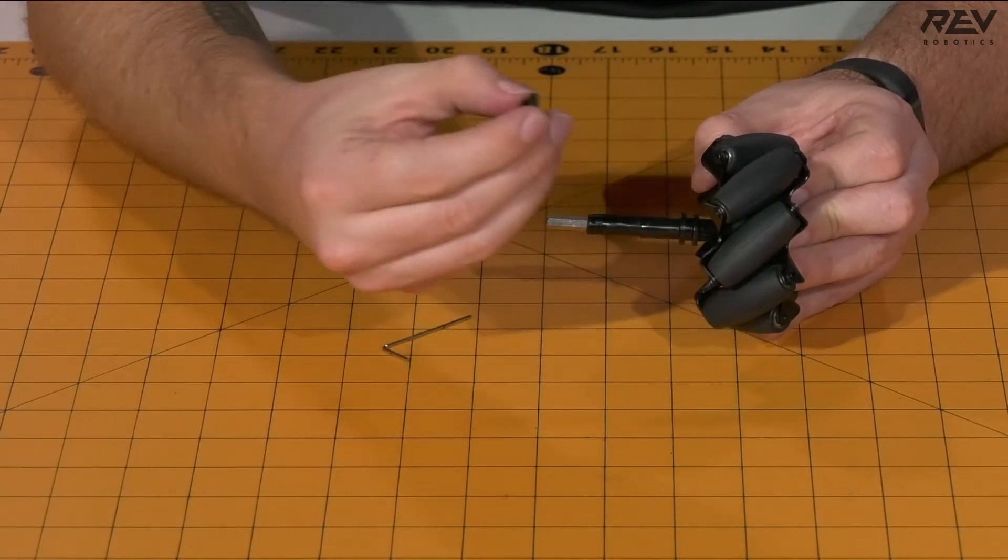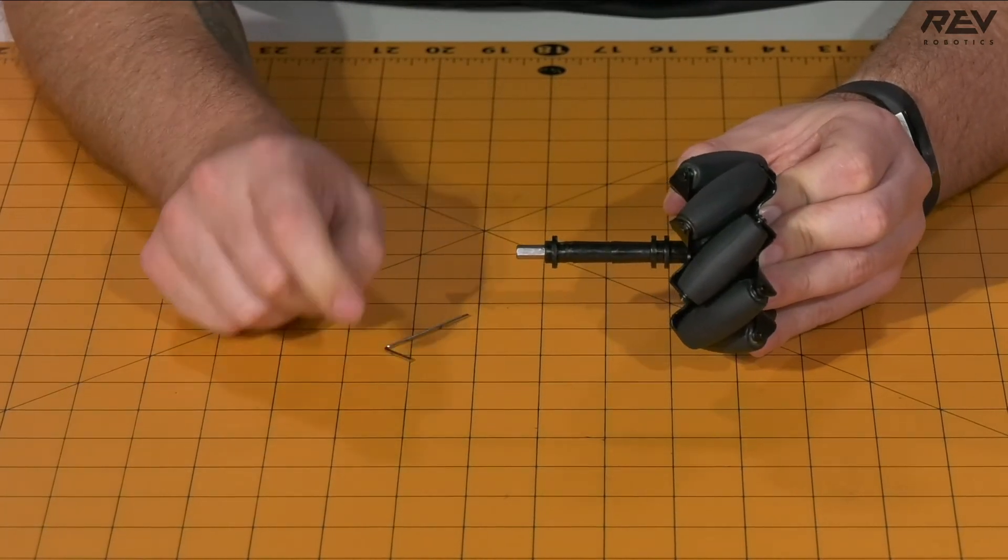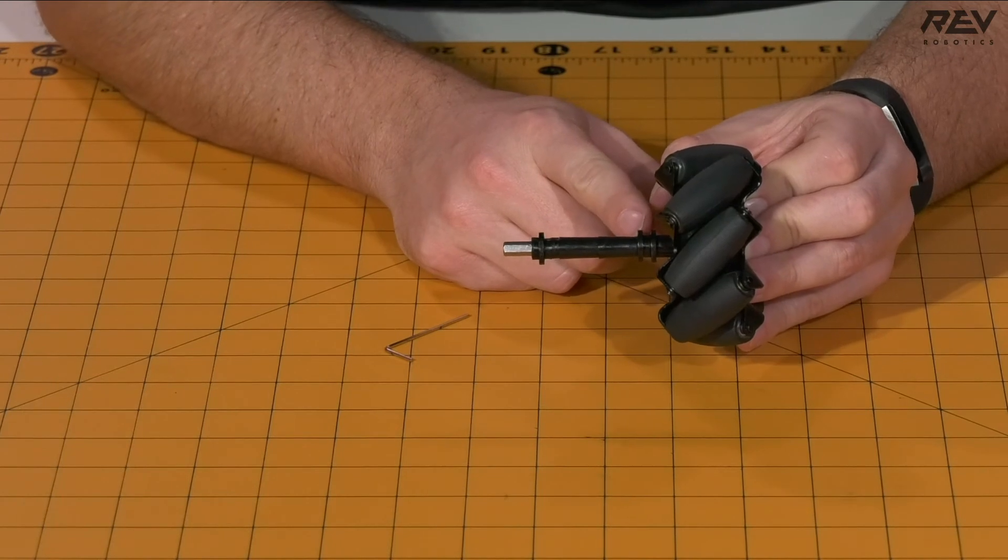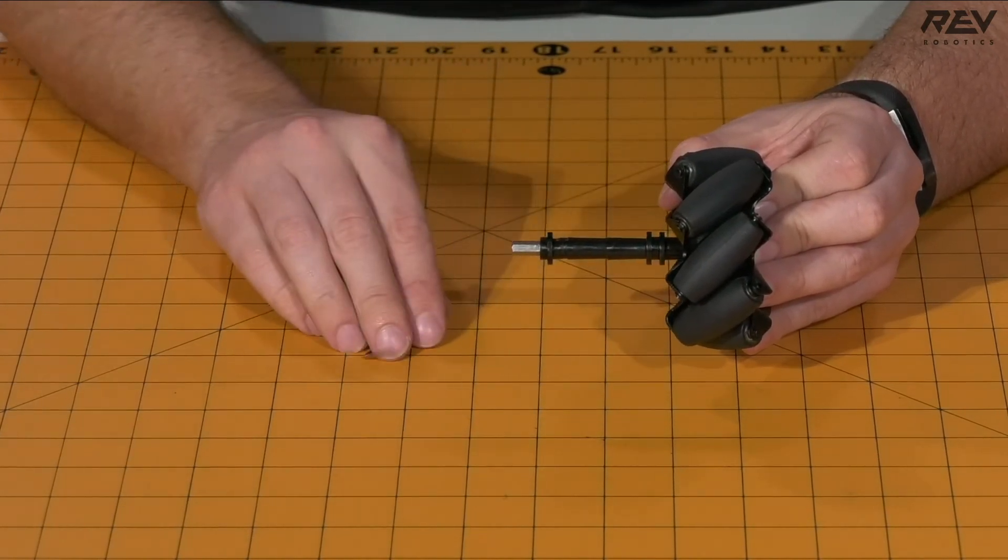Once that's complete, take the remaining short through-bore bearing and slide it into place. It's important to note that the flange on this through-bore bearing is in the opposite orientation of the ones you put on earlier. This will be important further on in the assembly.